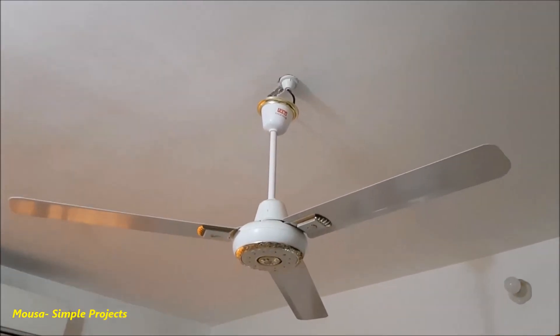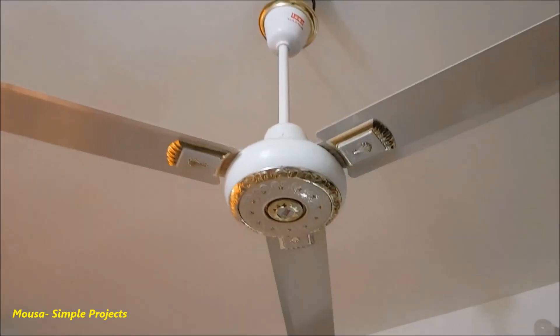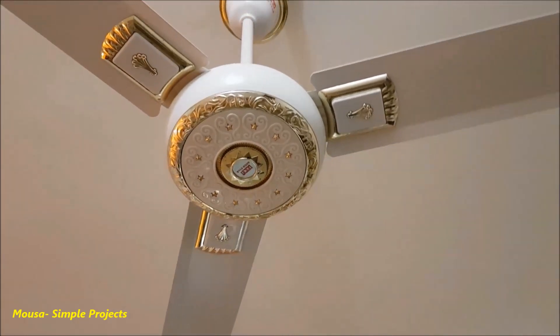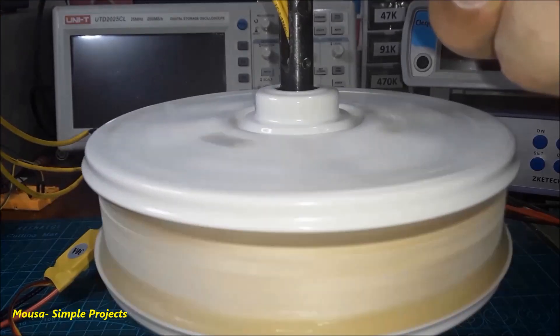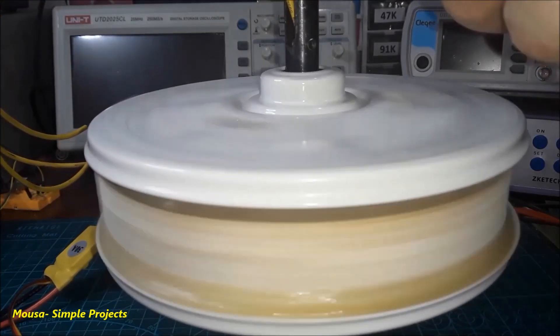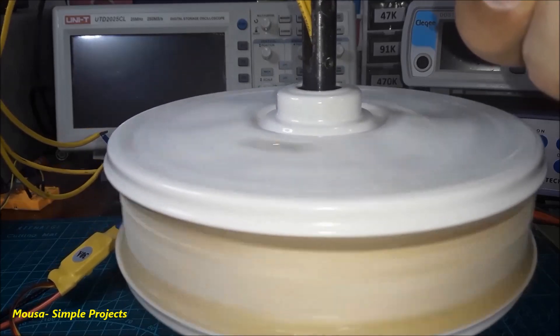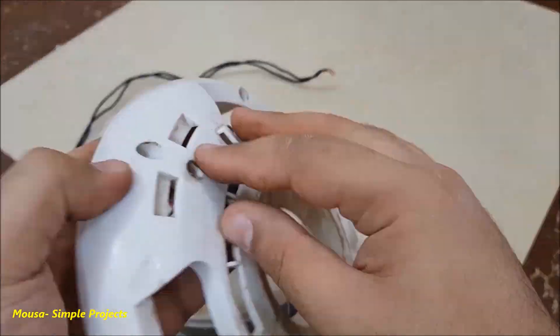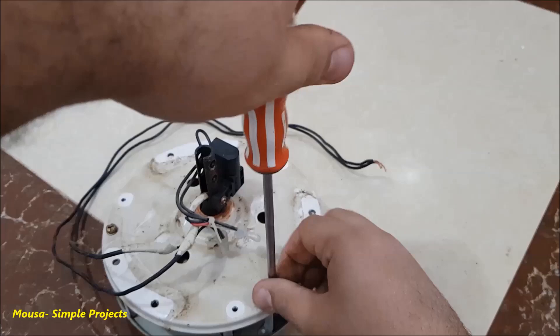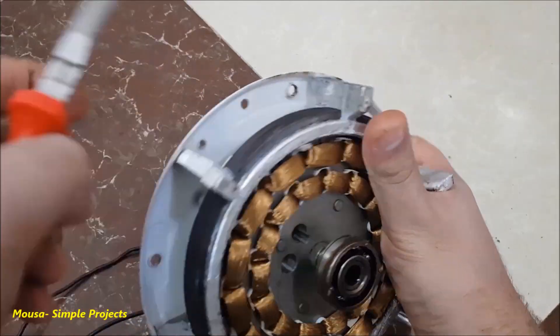Hey guys, in this video I convert a 220 volt ceiling fan motor to a brushless DC motor. I opened the fan motor and removed the copper wires from it.